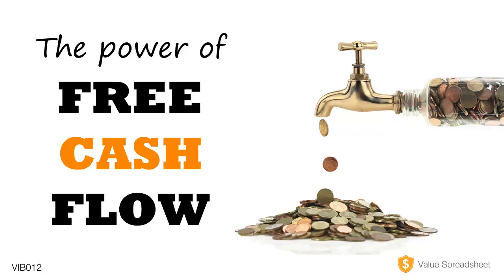That is the amount of cash the company actually generated from just running its business. However, that is not the cash that can actually be given to shareholders, because the company will also have to pay for capital expenditures — often called property, plant, and equipment. It has to pay for its machines, its rent, its electricity bill, just to stay in business. The easiest way to calculate free cash flow is by taking the cash from operations and then subtracting the capital expenditures. What you are left with is the so-called free cash flow — the cash that can actually be taken out of the business and potentially given to shareholders while the business will still be able to keep on running.